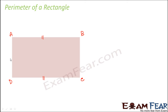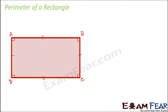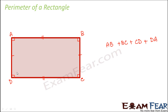Similarly, the opposite sides AD and BC are also parallel and equal in length. So opposite sides are equal and parallel in a rectangle, and all four angles are equal to 90 degrees. The perimeter is the total boundary, which is the sum of the four sides: AB plus BC plus CD plus DA.